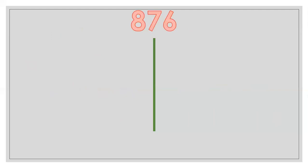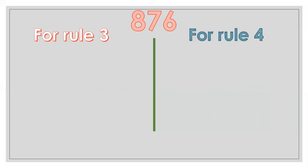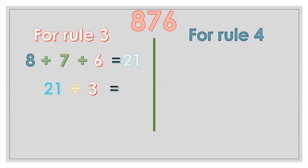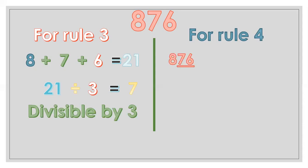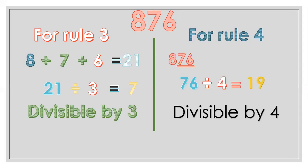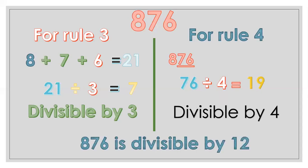Another example: 876. For divisibility by 3: 8 plus 7 plus 6 equals 21, and 21 divided by 3 equals 7, so it is divisible by 3. For divisibility by 4, the last two digits are 76. Since 76 divided by 4 equals 19, it is divisible by 4. Therefore, 876 is also divisible by 12.